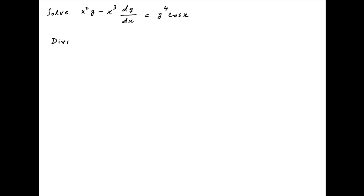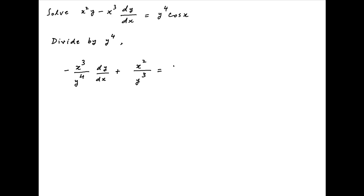We start by dividing both sides of the given differential equation by y raised to the power 4. Therefore, the given differential equation can be written as minus x cube upon y raised to the power 4 dy upon dx plus x square upon y cube is equal to cos x.